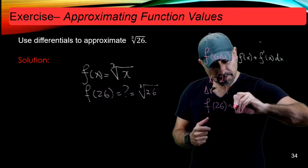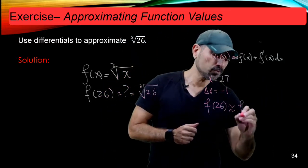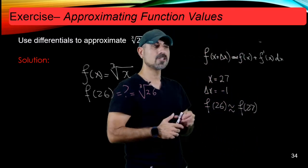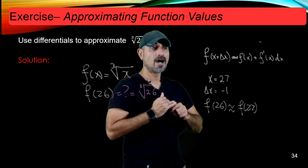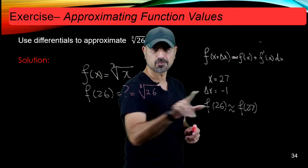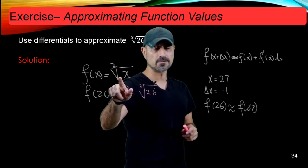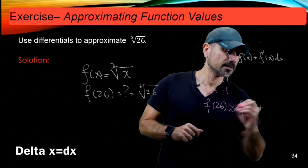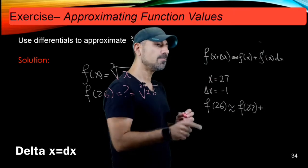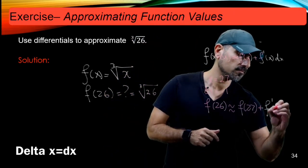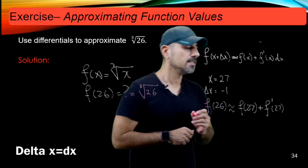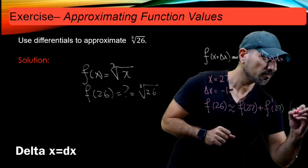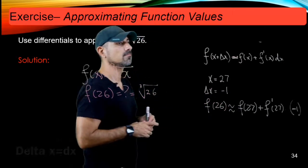And that's going to be approximated by f of 27, which is something I can calculate without a calculator because f of 27 is the cubic root of 27. That's 3. Plus, we're going to have f prime evaluated at 27. And dx is the same as delta x for this problem, so it's going to be negative 1. We're going to multiply this by negative 1.